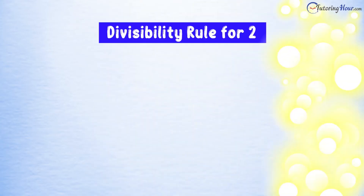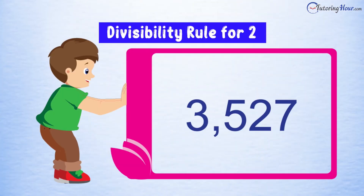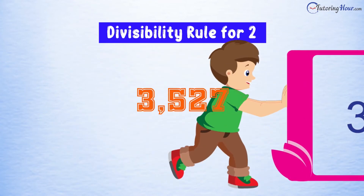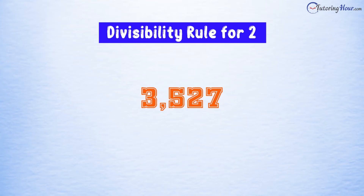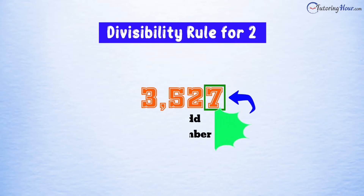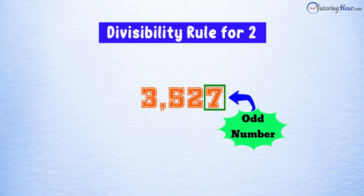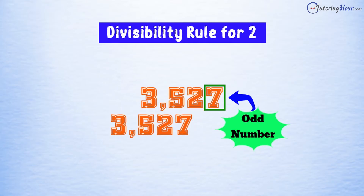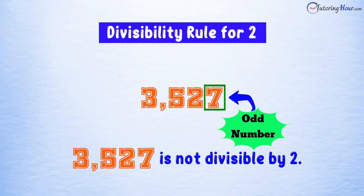How about this number? Is it divisible by 2? We'll check the last digit. 7 is an odd number — it does not pass the divisibility test for 2.